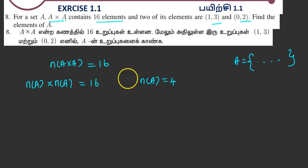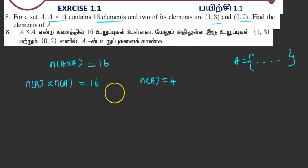n(A) is 4. (1,3) and (0,2) are in A cross A.